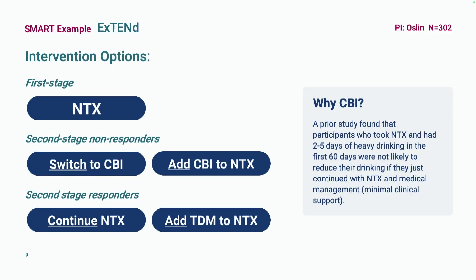In terms of intervention options: in the first stage, everybody gets naltrexone. In the second stage, non-responders might switch to the combined behavioral intervention or augment naltrexone by continuing it and adding the CBI. For responders, the strategies are either to continue with naltrexone alone or to continue with naltrexone and add telephone disease management.